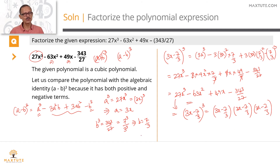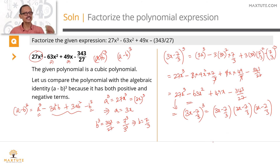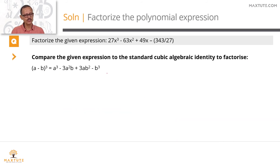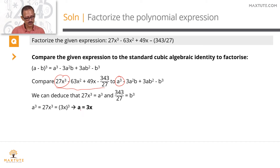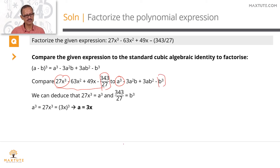So this is one approach — we found a and b, then verified that (a-b)³ expands to the given expression. I will walk you through the second method. But before that, let's deduce a and b in printed form. With the (a-b)³ expansion, we compare it with the given expression and say a³ = 27x³, so a = 3x. And b³ = 343/27, so b = 7/3.